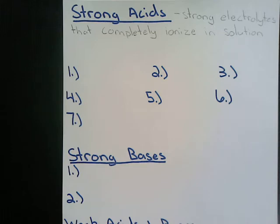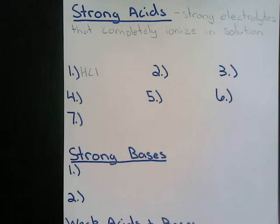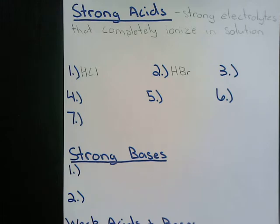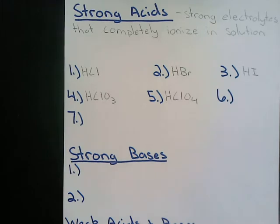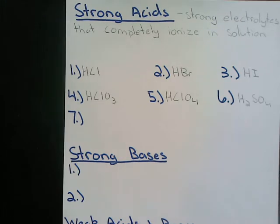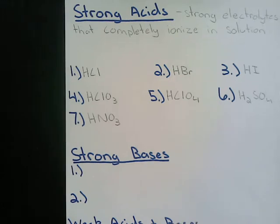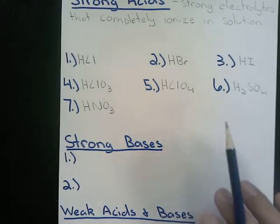There are seven strong acids. The first is hydrochloric acid (HCl). The second is hydrobromic acid (HBr). The third is hydroiodic acid (HI). The fourth is chloric acid (HClO3). The fifth is perchloric acid (HClO4). The sixth is sulfuric acid (H2SO4). The seventh is nitric acid (HNO3). These seven strong acids need to be memorized.